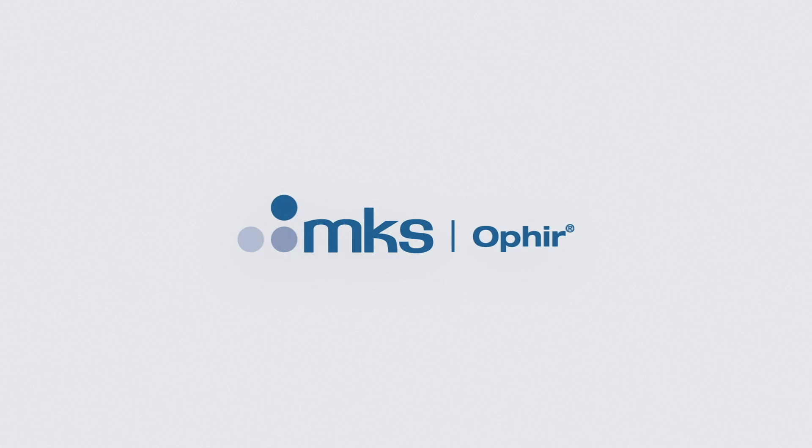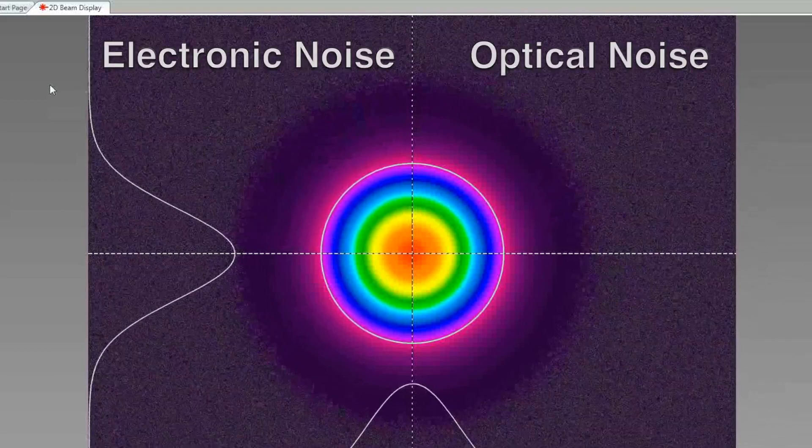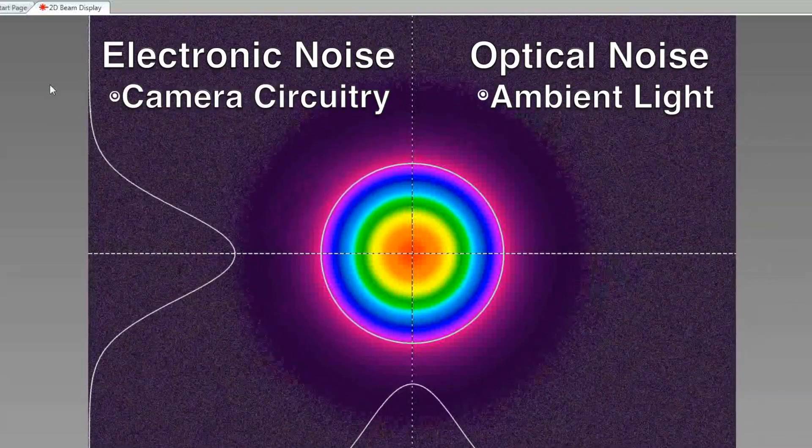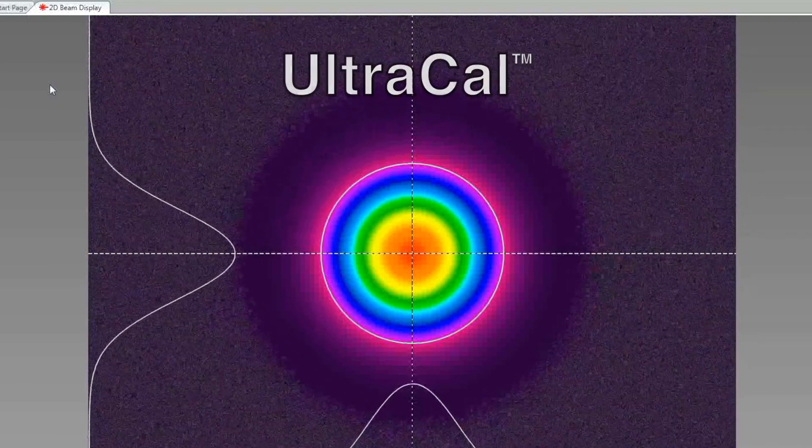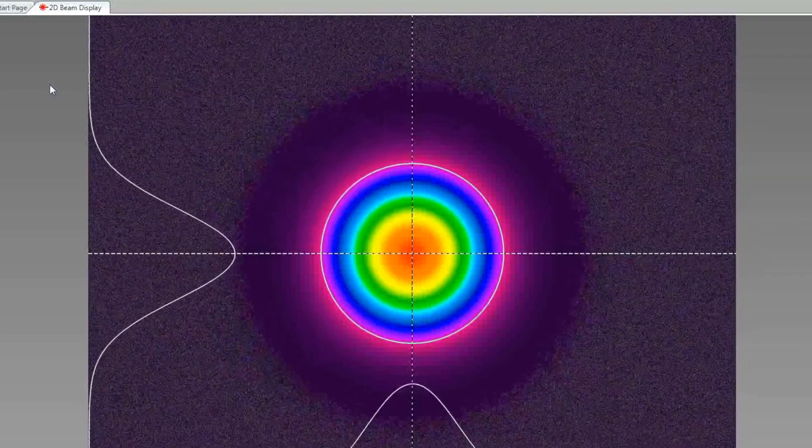To accurately measure a laser beam, Spiricon's Beam Gauge software eliminates everything from the measurement except energy from the laser beam. For example, ambient light, temperature changes, and electronic noise affect the signal intensity from the camera. Beam Gauge with UltraCal significantly reduces the noise that can alter the measurement of your laser.